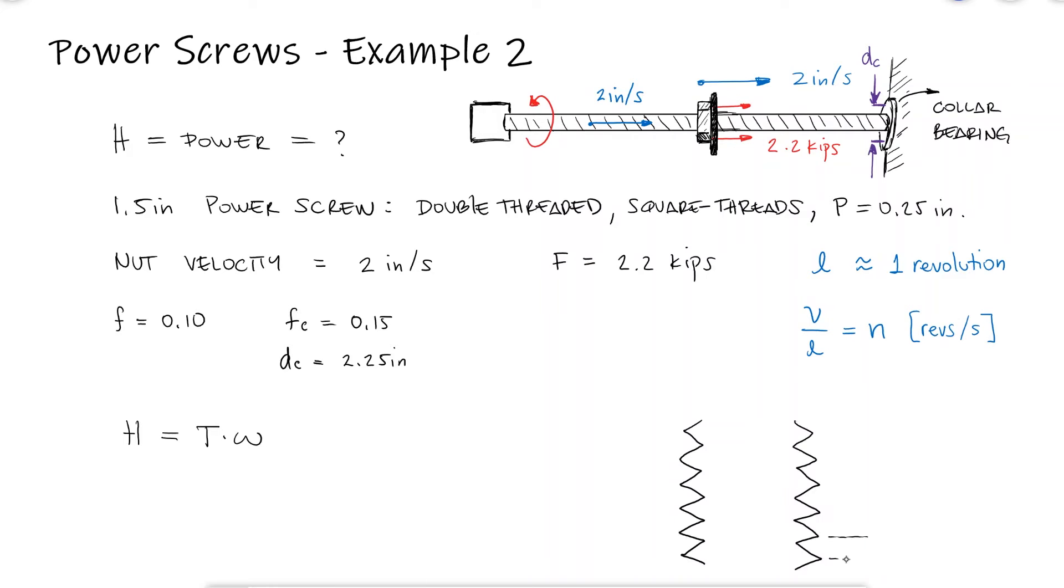If the pitch is 0.25 inches and the screw is double threaded, one full turn of the screw will make the nut advance a distance equal to 2 times the pitch. With 4 revolutions per second, or 8π radians per second, all we need to find is the torque necessary to generate 2.2 kips.